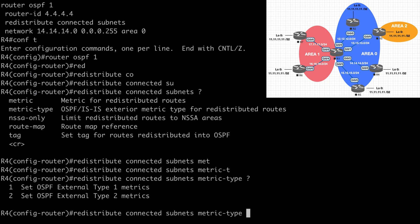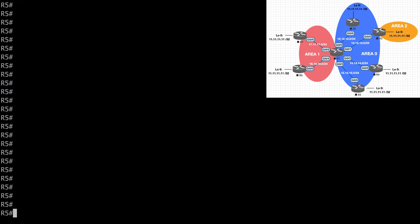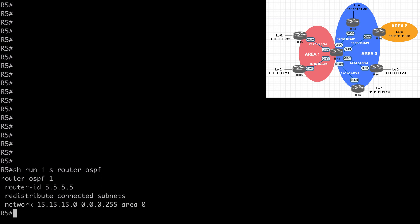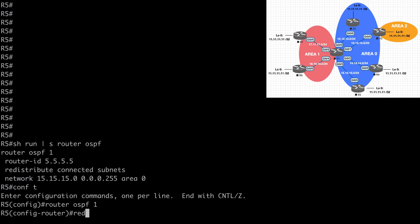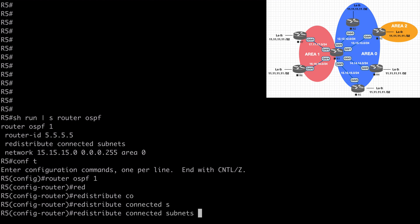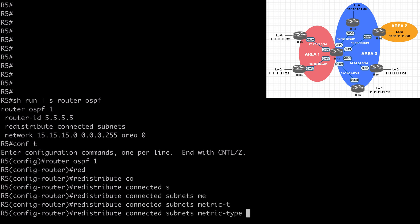Let's make R4 a type 1 and hit enter. Let's go to R5 and run the show command as well — we need to redistribute the loopback into OSPF here too. So let's go under router OSPF 1, redistribute connected subnets, metric-type, and this time we're going to create a type 2 and hit enter.